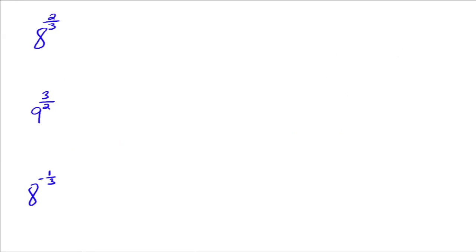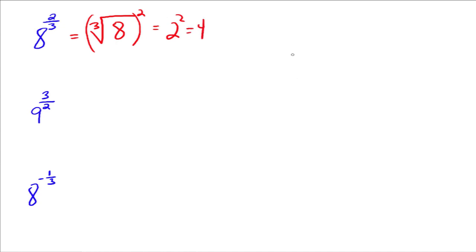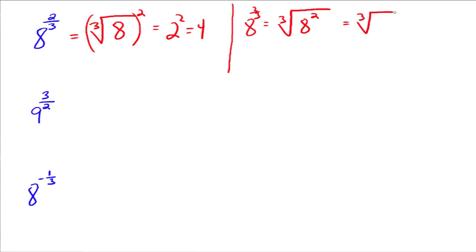Let's do another example: 8 to the 2 thirds. We can rewrite that as the cube root of 8 squared. The cube root of 8 is 2, and 2 squared is 4. So 8 to the 2 thirds is just a fancy way of writing 4. We can also write it the other way: the cube root of 8 squared becomes the cube root of 64, and the cube root of 64 is also 4. It doesn't matter which way you go.